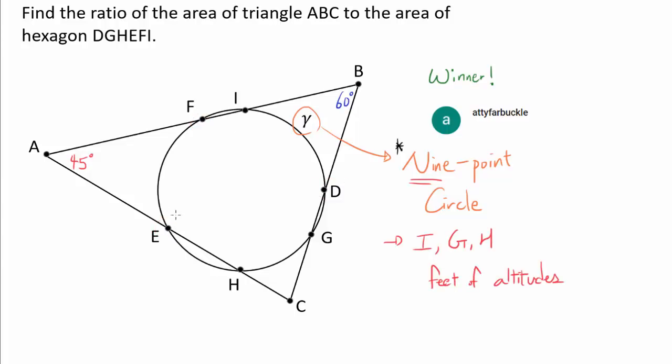Now, a key idea is that we don't really have to find the area of the hexagon, but we can find the area of the triangles outside the hexagon. So this triangle, this triangle, and this triangle.